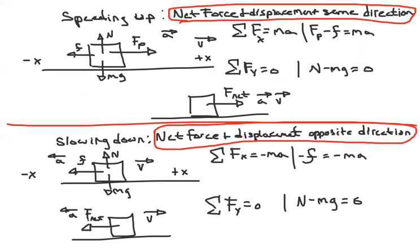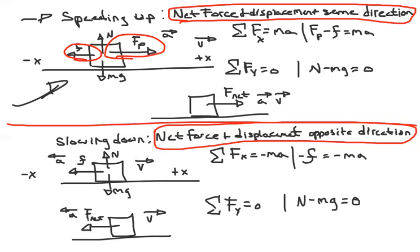Here's an example. When an object is speeding up, you can draw a free body diagram and see that one force — the push — is larger than friction. So there's going to be a net force in the direction of the push.